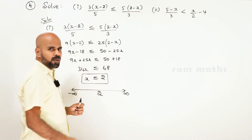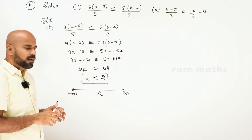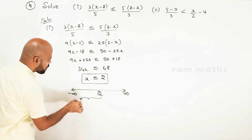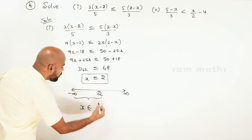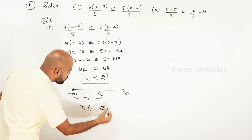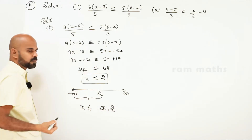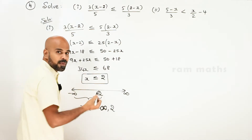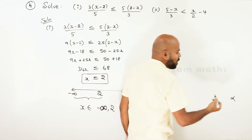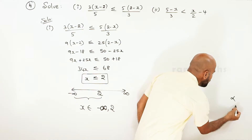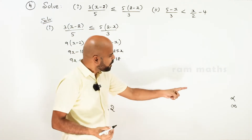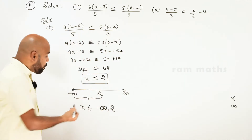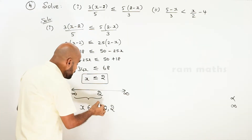x is less than or equal to 2. x belongs to minus infinity to 2. Minus infinity to 2 — let's see. This is alpha, this is infinity. Minus infinity to 2. Minus infinity is general; general is an open interval.